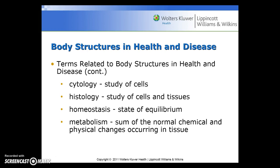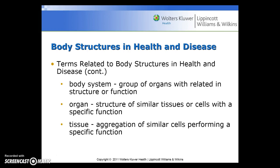Homeostasis is a state of equilibrium. Metabolism is the sum of the normal chemical and physical changes occurring in tissue. A body system refers to a group of organs with related structure or function. An organ is a structure of similar tissues or cells with a specific function. Tissue is the aggregation of similar cells performing a specific function.